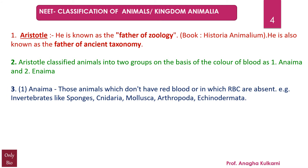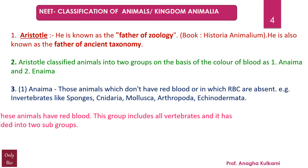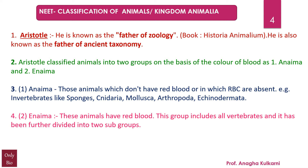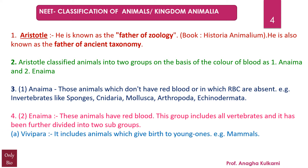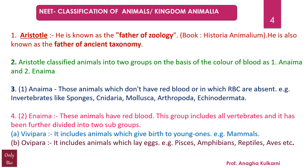Anaima includes those animals which don't have red blood, or in which RBCs are absent. Examples: invertebrates like sponges, cnidaria, mollusca, arthropoda and echinodermata. Enaima are the animals which have red blood; this group includes all vertebrates and has been further divided into two subgroups. First, vivipara, which includes animals that give birth to young ones — example: mammals. Second, ovipara, which includes animals that lay eggs — example: fishes, amphibians, reptiles, apes, etc.